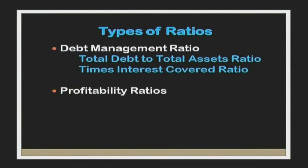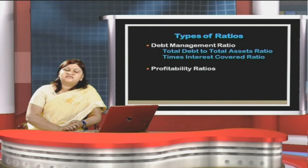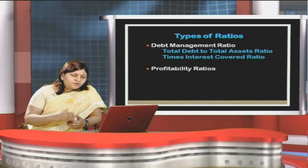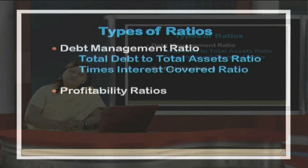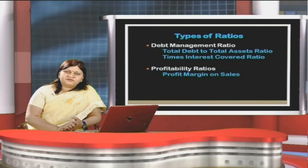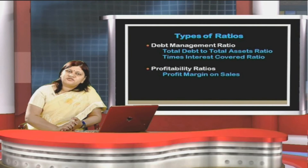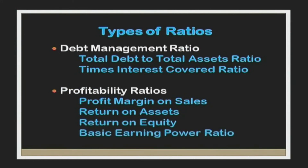Next is the profitability ratio, which tells us how efficiently business is being conducted — how production, sales, and purchase activities are carried out and the method of managing the business. Ratios falling under profitability include profit margin on sales (GP ratio or NP ratio), return on assets, return on equity, and basic earning power ratio.